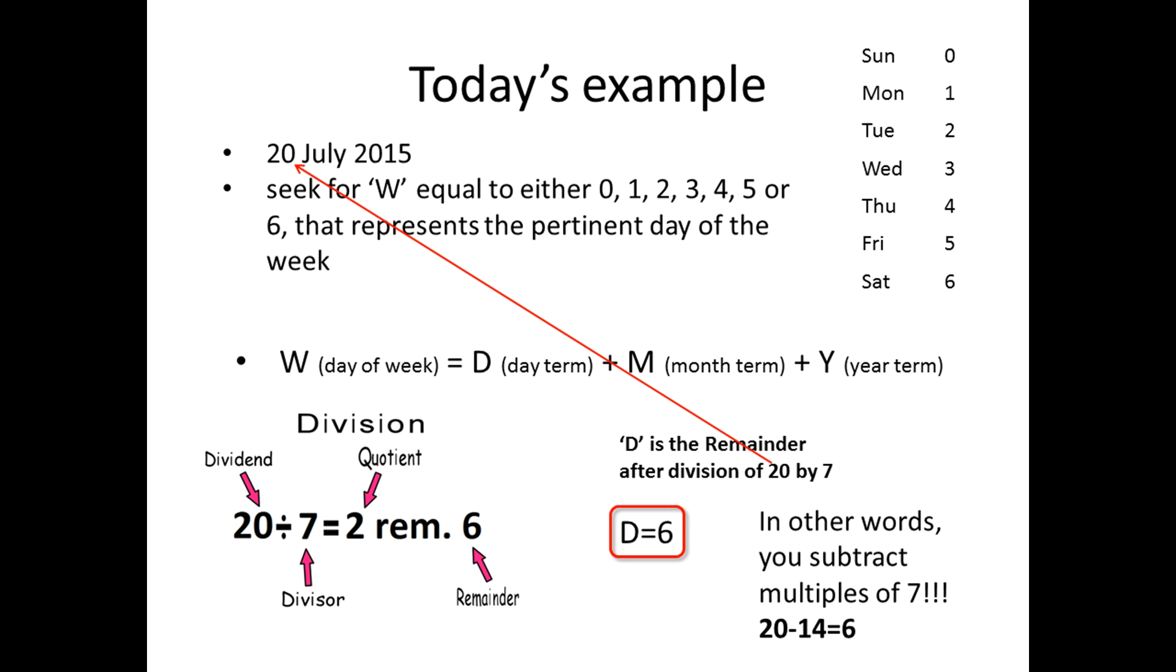The best way to learn it is by doing an example, 20th of July 2015. Let W be the variable that you seek for, which in the end will be a number between 0 and 6, which will give the day of the week. W then is the sum of three terms.